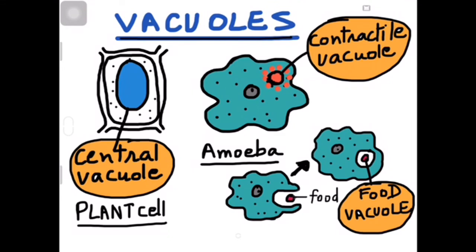Vacuoles are membrane-bound spaces found in the cytoplasm. They contain water, sap — which is a kind of liquid — some excretory products, and materials not immediately useful to the cell. The membrane covering the vacuole is called the tonoplast.